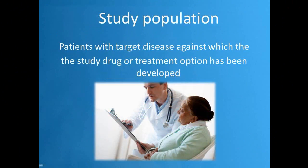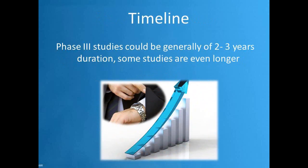Study Population: Patients with the target disease against which the study drug or treatment option has been developed. Timeline: Phase 3 studies could generally be of 2 to 3 years duration; some studies are even longer.